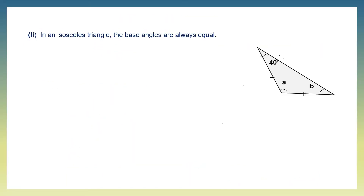Question 2. In an isosceles triangle the base angles are equal. Keeping that property in mind, we are going to find the values of angles a and b. The base angles are the angles opposite the equal sides, so the base angles are angle b and angle 40. Therefore angle b is equal to 40 degrees.